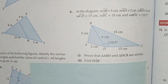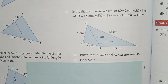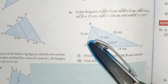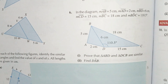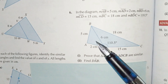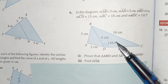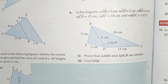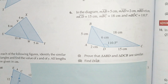Now students, this is question number 6. In the diagram, AB is 5 cm, AD is 2 cm, BD is 6 cm, CD is 15 cm, and BC is 18 cm. And this angle is also given to us.